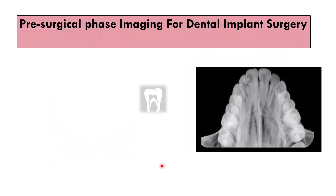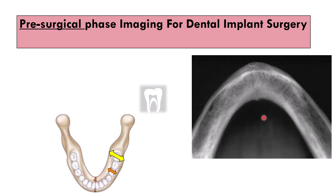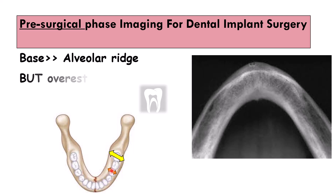You might ask whether we can use the occlusal radiograph to see the buccal-lingual dimension. Yes, it is possible. But for the maxilla, we have superimposition of anatomical structures. And for the mandible, the base of the mandible is usually wider in the buccal-lingual dimension than the alveolar process, so the result would be an overestimation of the buccal-lingual dimension.